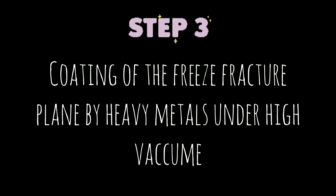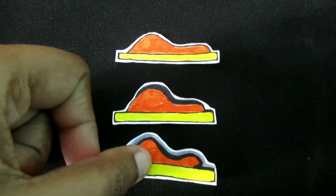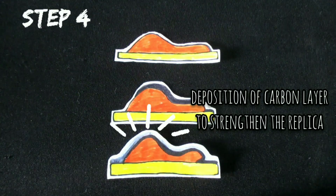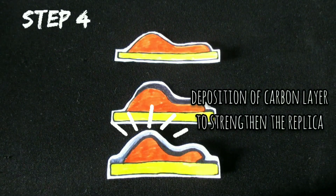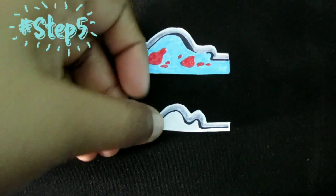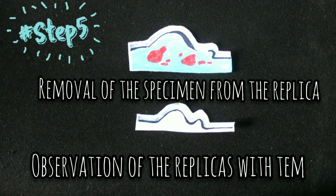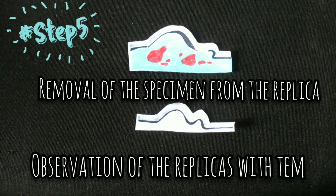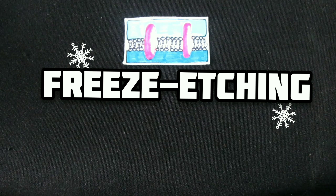Following the fracturing step, the sample undergoes a vacuum procedure called freeze etching. The surface of the sample is shadowed with carbon and platinum vapor to make a stable replica which follows the contours of the fracture plane. Acids like nitric, sulfuric, and chromic acids are used to digest organic material adhering to the replica. This leaves a thin platinum shell of the fractured membrane structure, which is then analyzed by electron microscope.